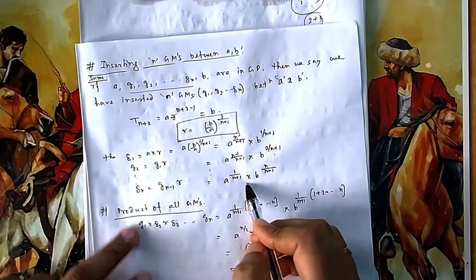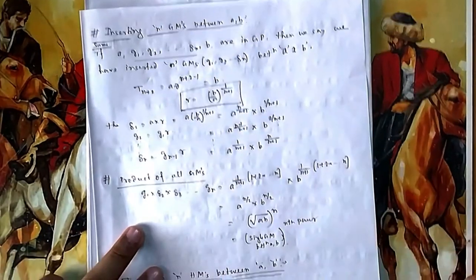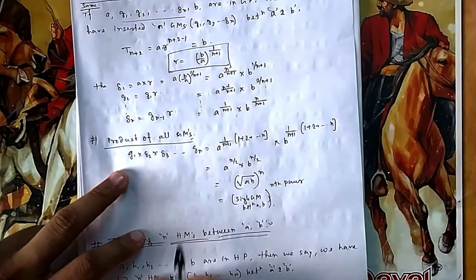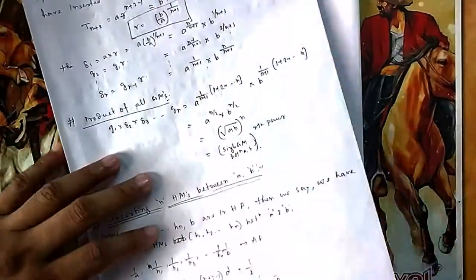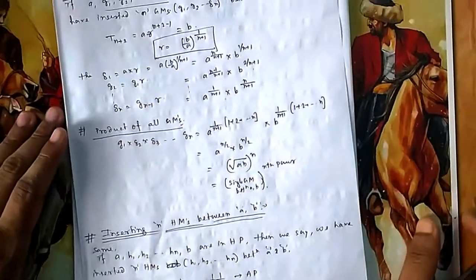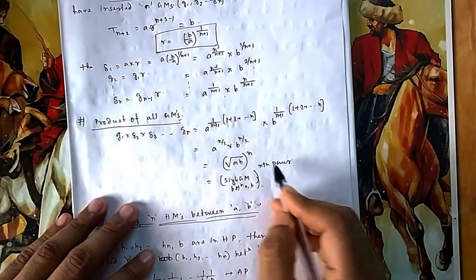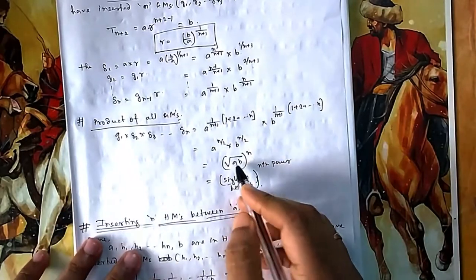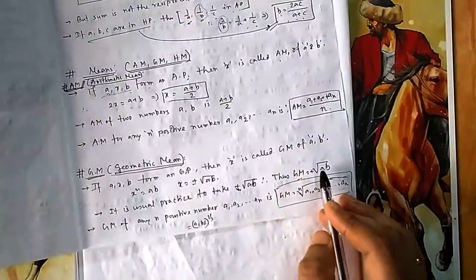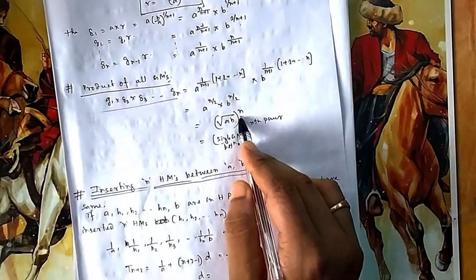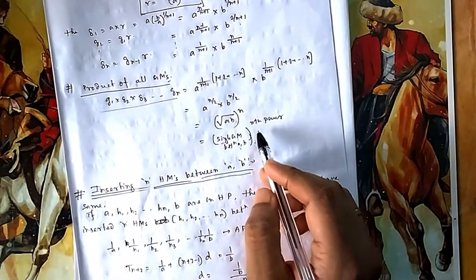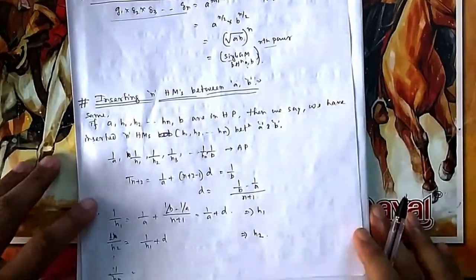If you take the product of all n GMs, since a cancels and b builds up term by term, the product of all n GMs equals the nth power of the single GM. The single GM between a and b is √(ab), so the product of all n GMs equals (√(ab))^n.